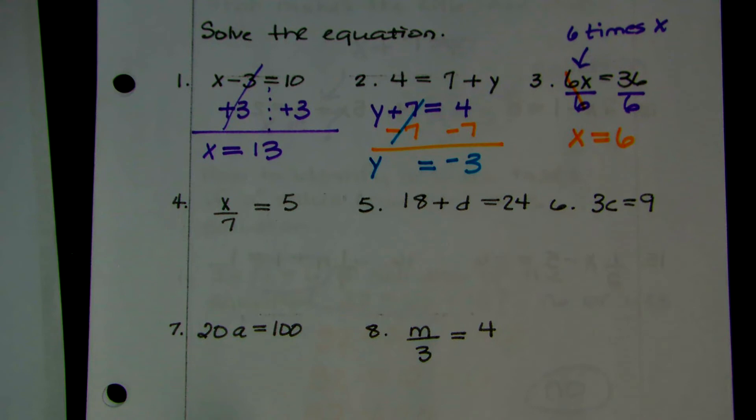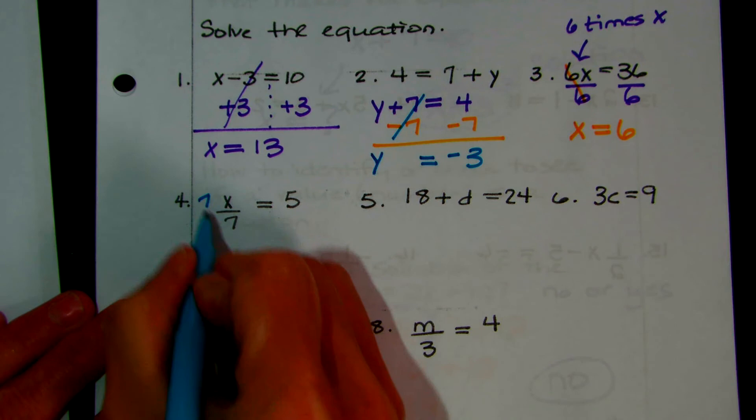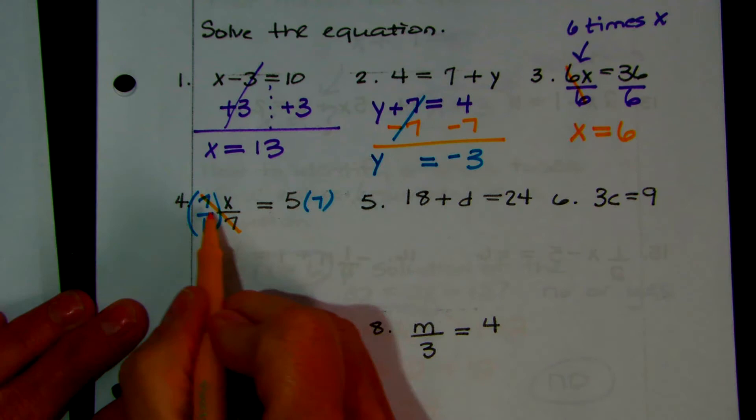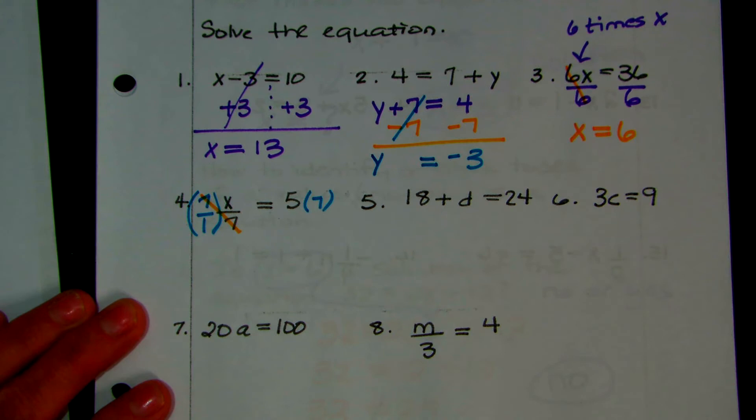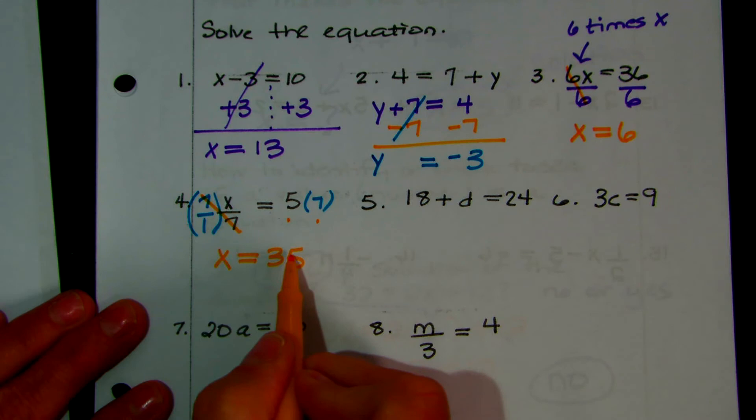You have x divided by 7. What's the inverse operation of division? Multiplication. So you're going to multiply both sides by 7 — you can make 7 into a fraction by putting it over 1. Whatever you do to one side, you have to do to the other. Then 7 divided by 7 cancels. x comes down, and 5 times 7 is 35. You can always check by substituting back into the original problem — 35 divided by 7 gives you 5.